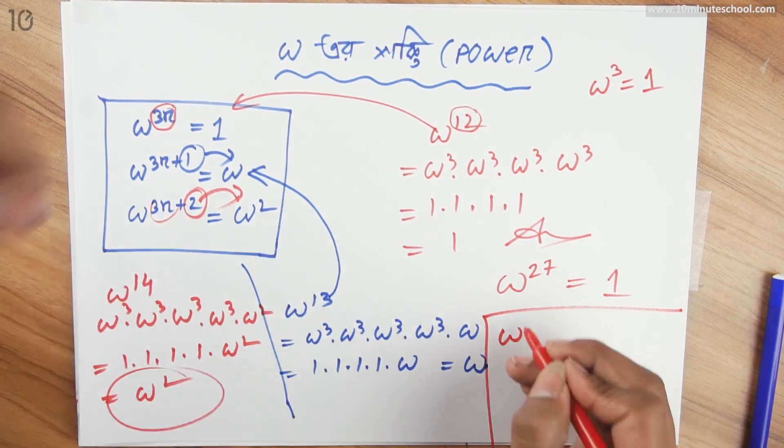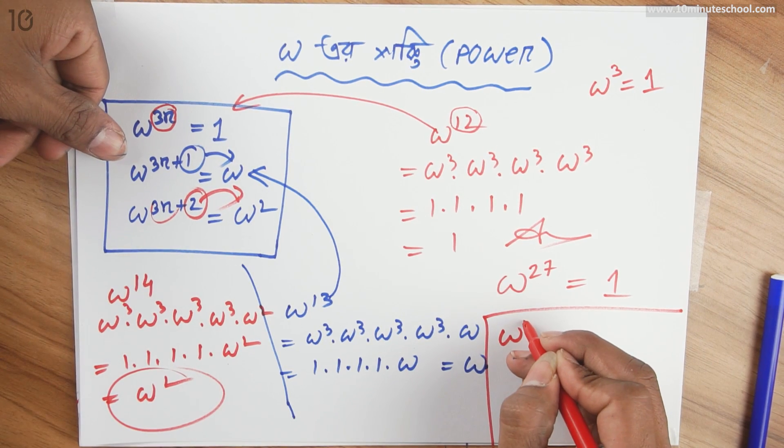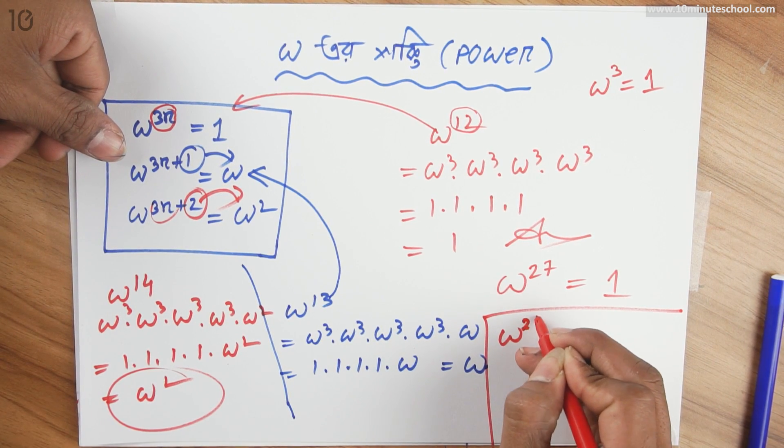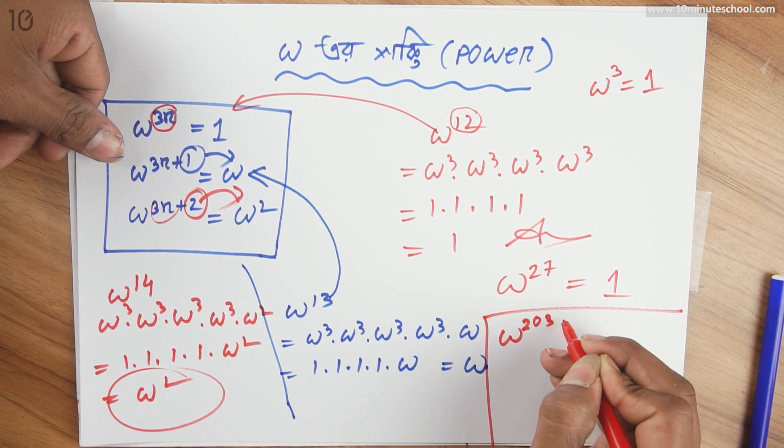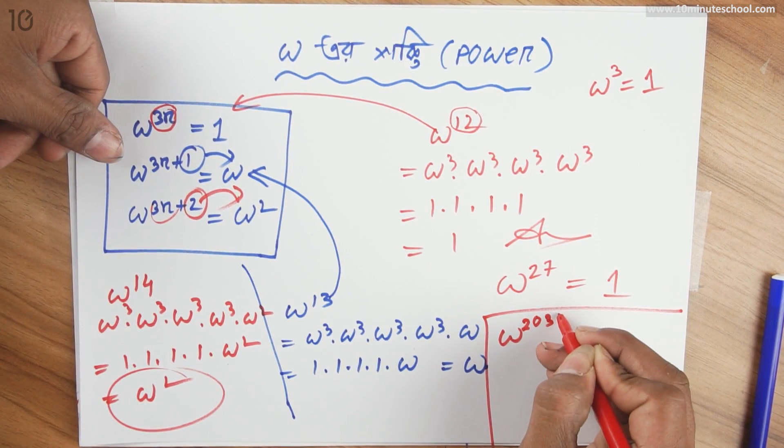Which is the only way to the power. So, you have the power of two, zero, three, seven.